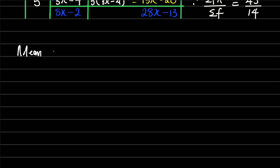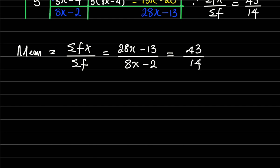Since I have this, then I'll now come fix it. Remember we said the mean is summation fx all over summation f. Now this will be 28x minus 13 all over 8x minus 2, and recall everything here is equals to 43 all over 14. Now you could see that it has turned to be an equation where when we cross multiply, I'm gonna have 14 into 28x minus 13, then it's equals to 43 into 8x minus 2.